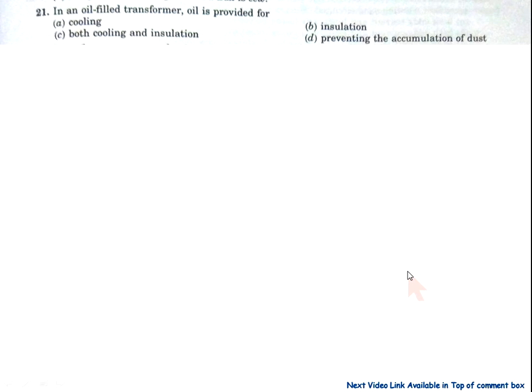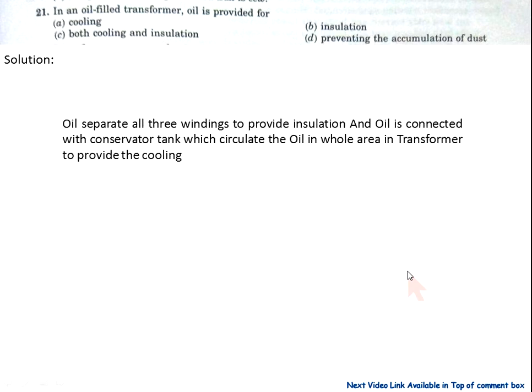Question number 21: In oil-filled transformers, oil is provided for — A) cooling, B) insulation, C) both cooling and insulation, D) preventing the accumulation of dust. The solution: oil separates all three phase windings to provide insulation. Oil is also connected with the conservator tank which circulates the oil throughout the transformer area to provide cooling.